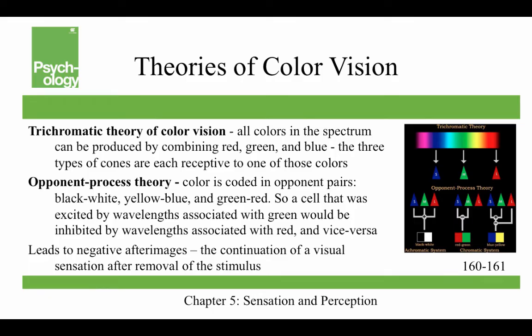Theories of color vision — people actually used to argue about which one was right. The trichromatic theory says all colors in the spectrum can be produced by combining red, green, and blue, and there are three types of cones receptive to each of those colors. The opponent process theory says color is coded in opponent pairs — black and white, yellow and blue, and red and green — so a cell excited by wavelengths associated with green would be inhibited by wavelengths associated with red, and vice versa.